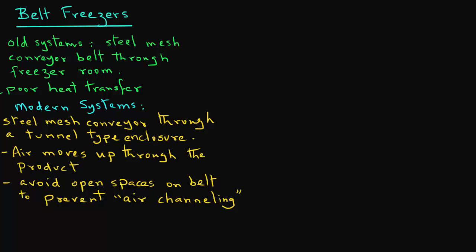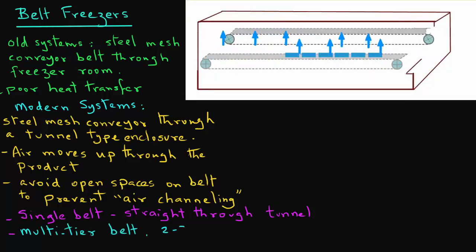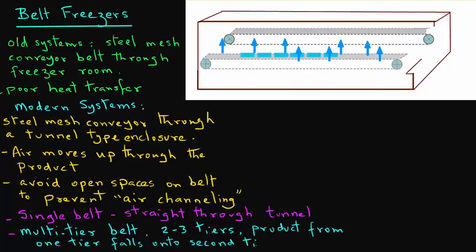Many belt freezing systems use a single belt that is run straight through the tunnel. However, there are also multi-tier belts that may include two or three tiers. In this case, product from one tier falls onto the second tier below.